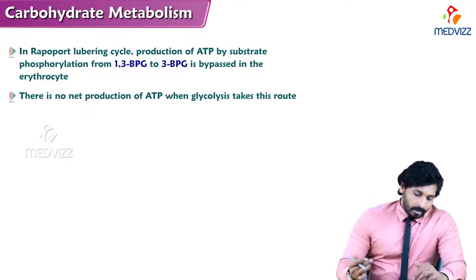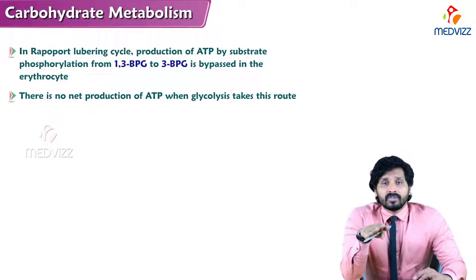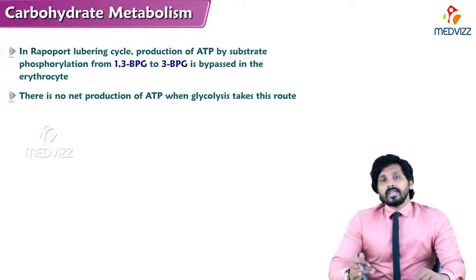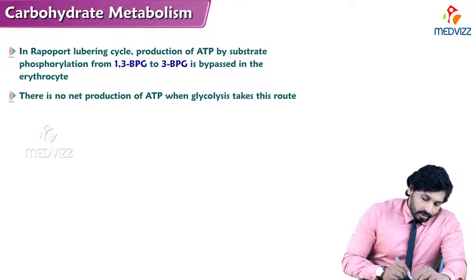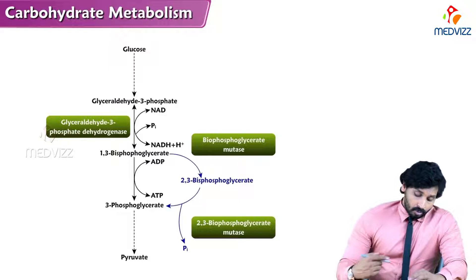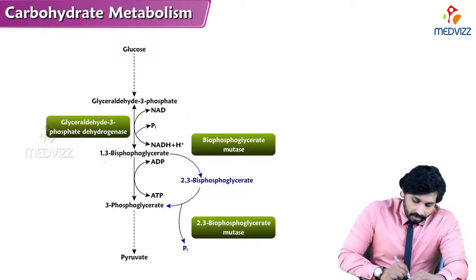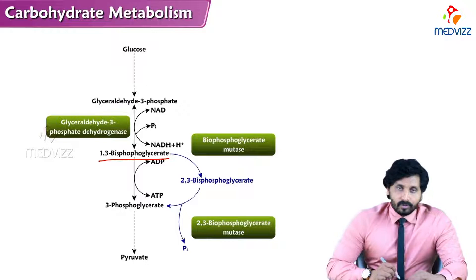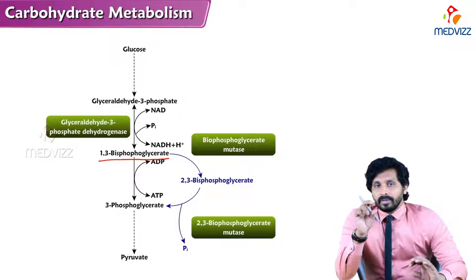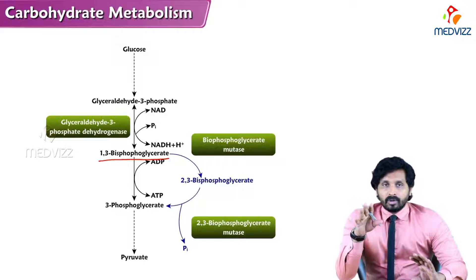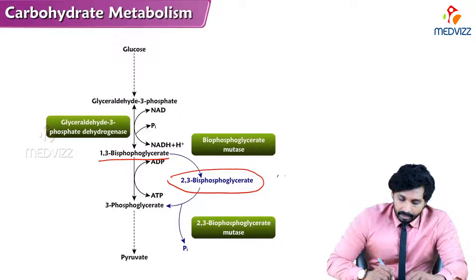In the Rapoport-Luebering cycle, the production of ATP by substrate-level phosphorylation is prohibited and bypassed, thereby reducing the total amount of ATPs in RBC — there is no net production of ATP when glycolysis takes this route. At the level of 1,3-bisphosphoglycerate, the enzyme phosphoglycerate mutase transfers the phosphate group from the first carbon to the second carbon of 1,3-bisphosphoglycerate, forming 2,3-bisphosphoglycerate (2,3-BPG).